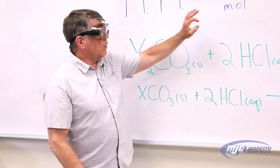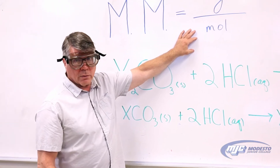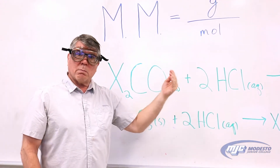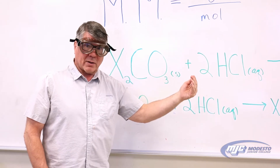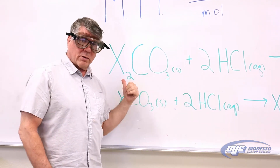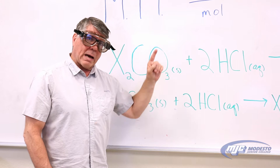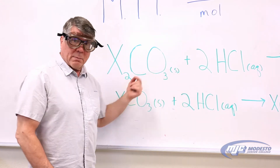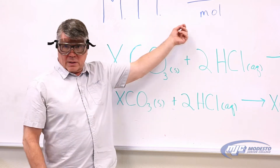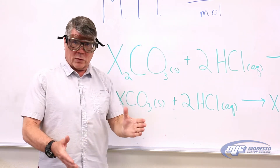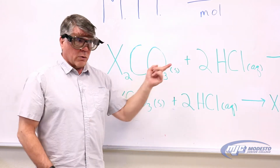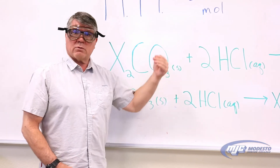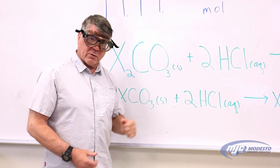The idea is that our goal is to find moles of our unknown. Because it's a one-to-one mole ratio between the carbon dioxide gas given off and our unknown, if we can figure out how many moles of carbon dioxide gas are given off, we know how many moles of our unknown we have — we have the denominator in our equation, and we're good to go. The whole setup we're using today is aimed at determining how many moles of carbon dioxide gas are given off.